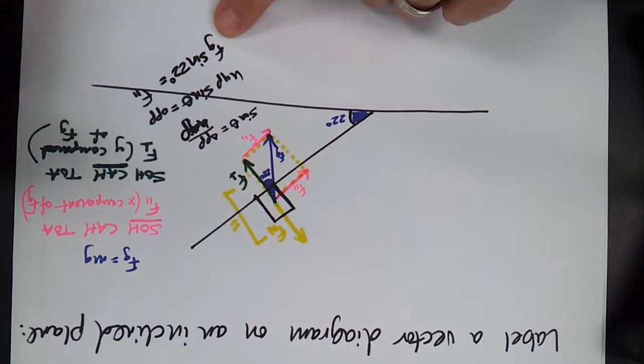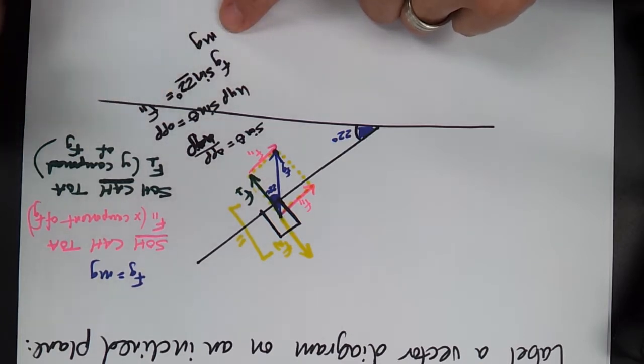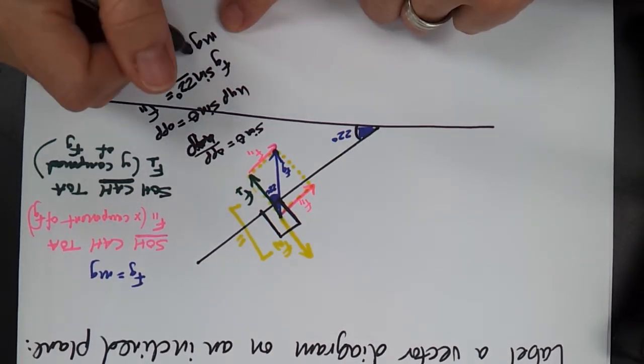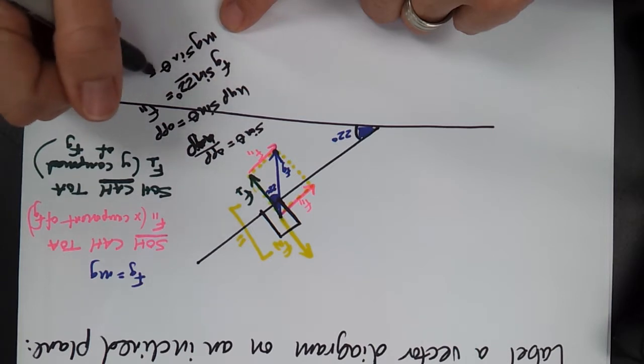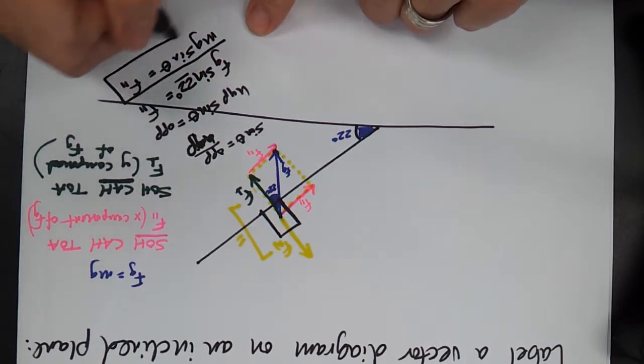Well, what is Fg really? Fg is mg. So we say, and I shouldn't have just put the degrees in, but we say mg sine theta is your F parallel. That is our equation for that.